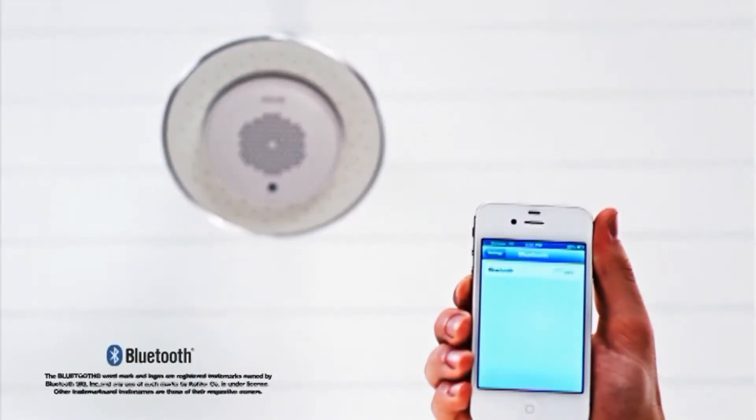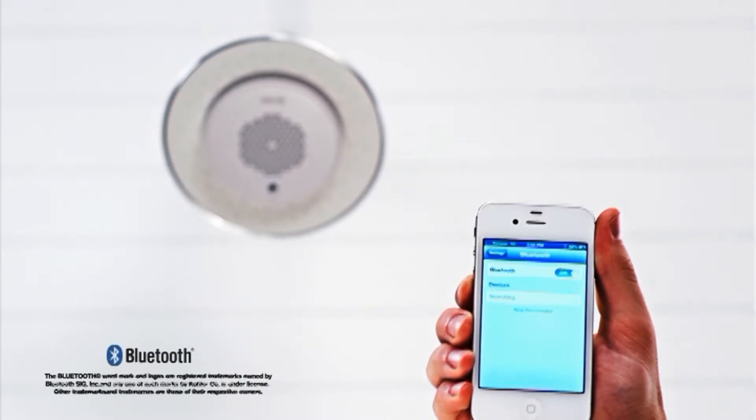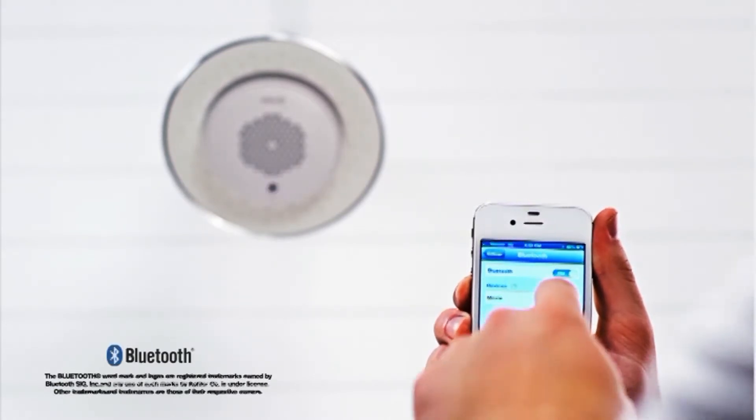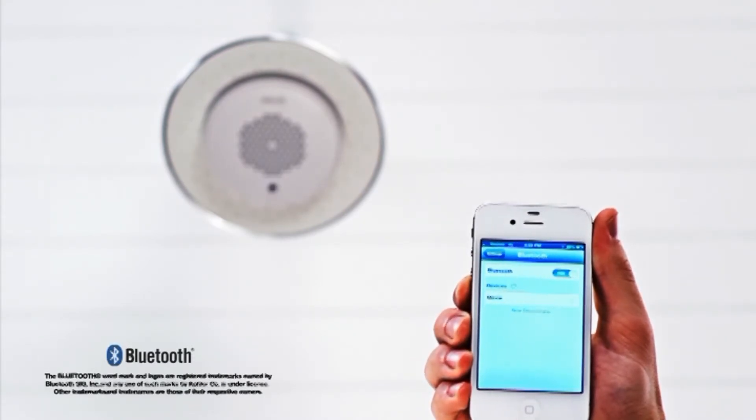To pair your device with the wireless speaker, first change the Bluetooth setting on your device to discoverable. If you are unsure how to do this, consult the manual for your media device. When paired, you'll hear two short tones and the LED light on the wireless speaker will turn solid blue.